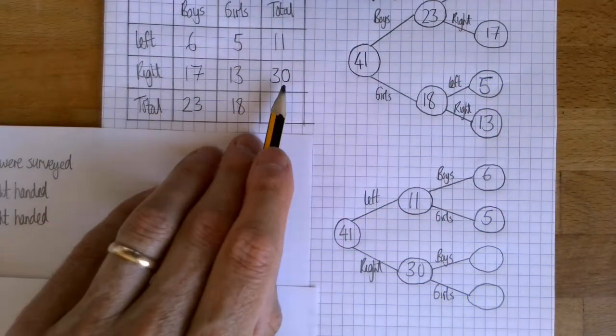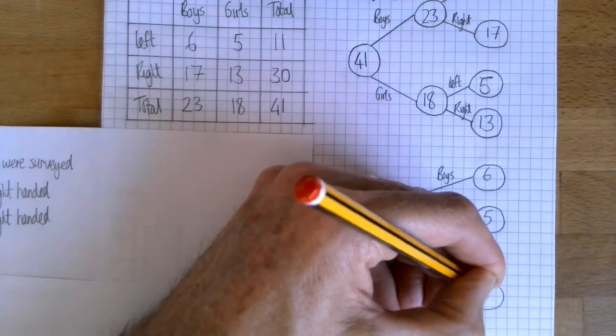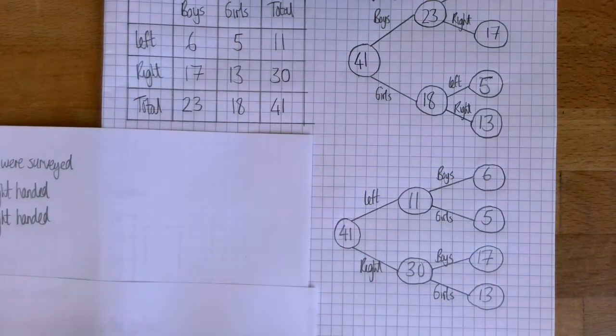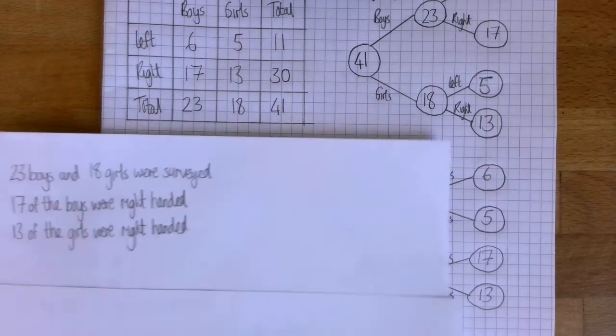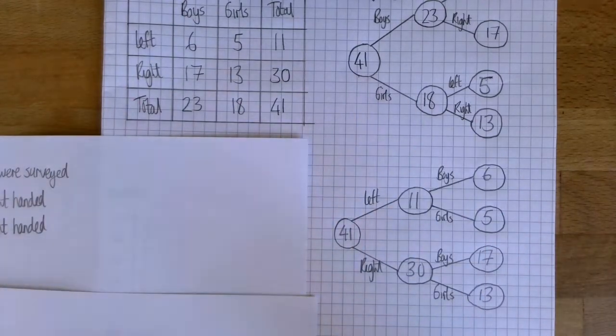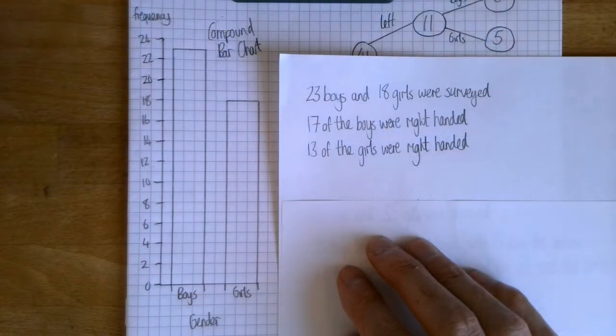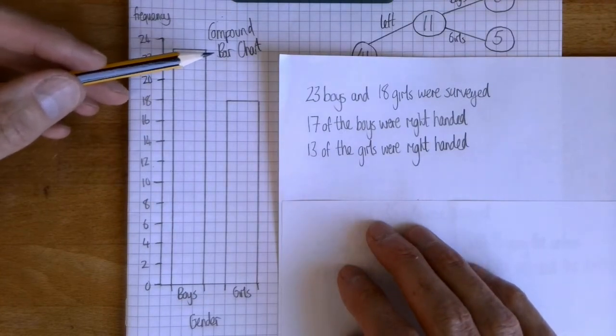This is one of the things I love about maths—with the same set of data we have represented that in a number of ways, all perfectly valid. It's not that one is better than another. And we can go on and represent it in even more ways. So here's another way of displaying the data. This is called a compound bar chart and I haven't finished it yet.